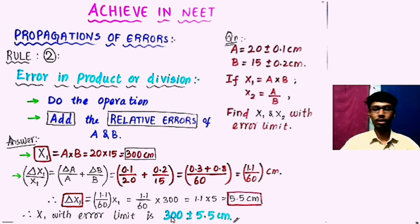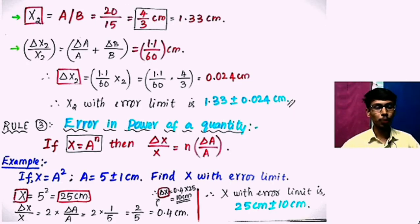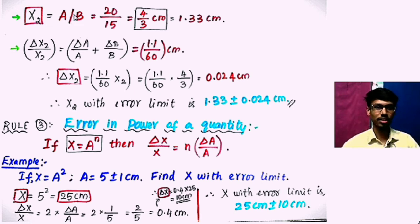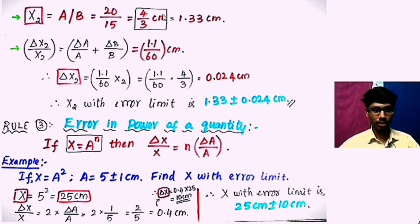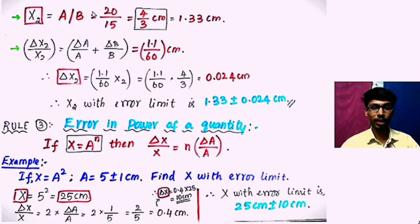Now we are going to find the error limit for x2, where x2 equals a by b — this is division. For division, same rule applies: first do the operation, then add the relative errors of a and b. So a divided by b: 20 divided by 15 equals 1.33 cm. Second step: add the relative errors of a and b.